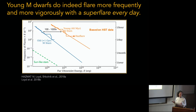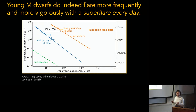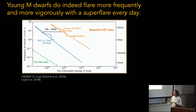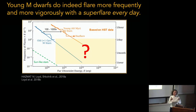There should be a cutoff at some energy, because that's the total amount of energy you have in the magnetic fields — maybe around 10^35 ergs or so. We don't really know, but we want to measure that turnover. We want to measure where this cutoff is because you cannot have infinite energy — it's going to turn over, and we haven't detected it yet.